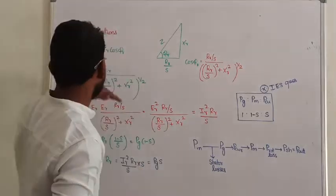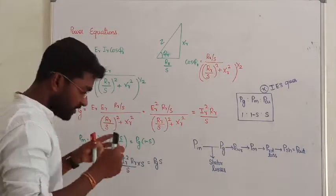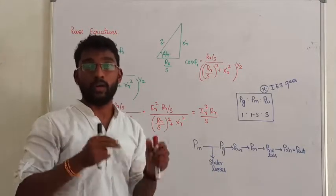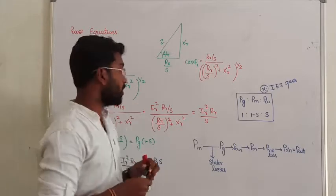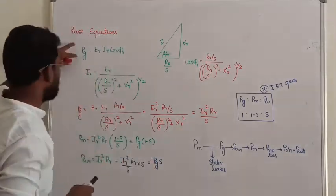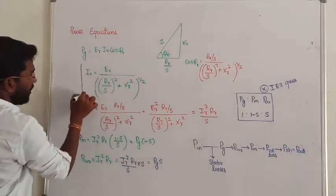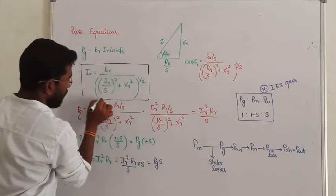Let us see the power equation. In the last lecture, we talked about the indexing equivalent circuit. In such a case, we saw the formula to calculate the rotor current.